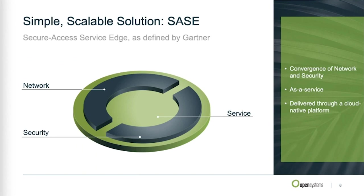Those two domains were primarily distinct before — different technologies, different goals, typically handled by different teams within organizations — and most often those teams had conflicting goals. The network team wanted to be agile: support the business, connect new branch sites, integrate a new company, connect users to a new SaaS application. Security wanted to take things slowly and make sure everything stayed compliant.